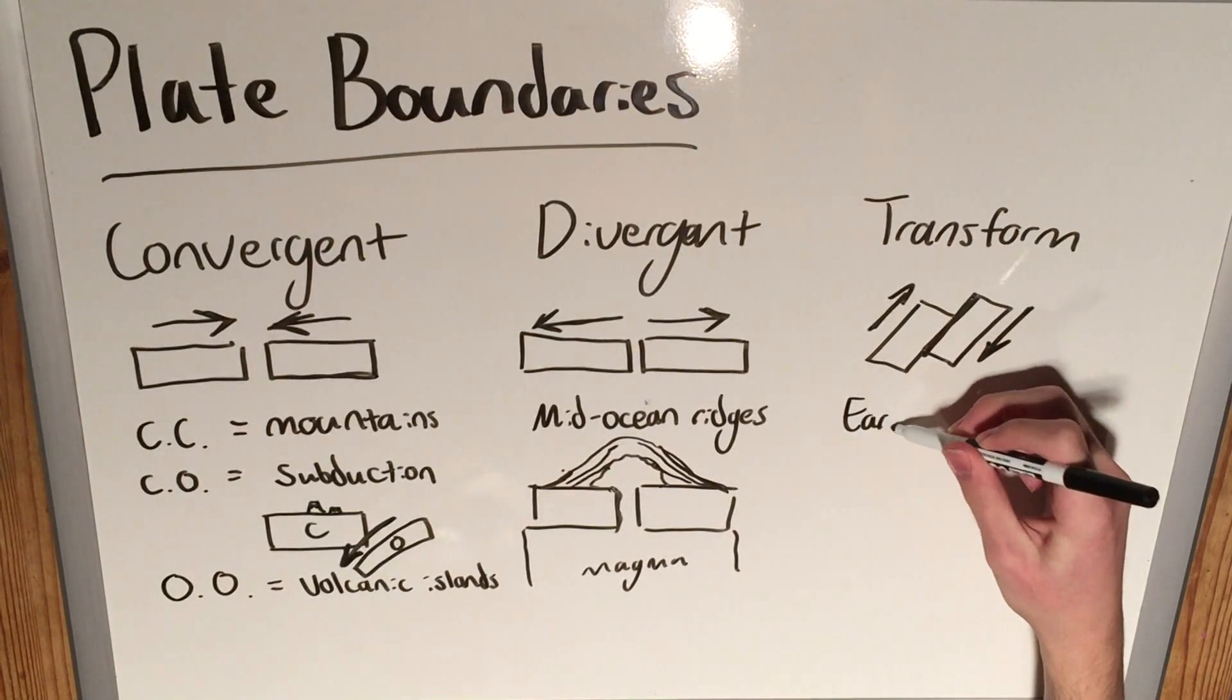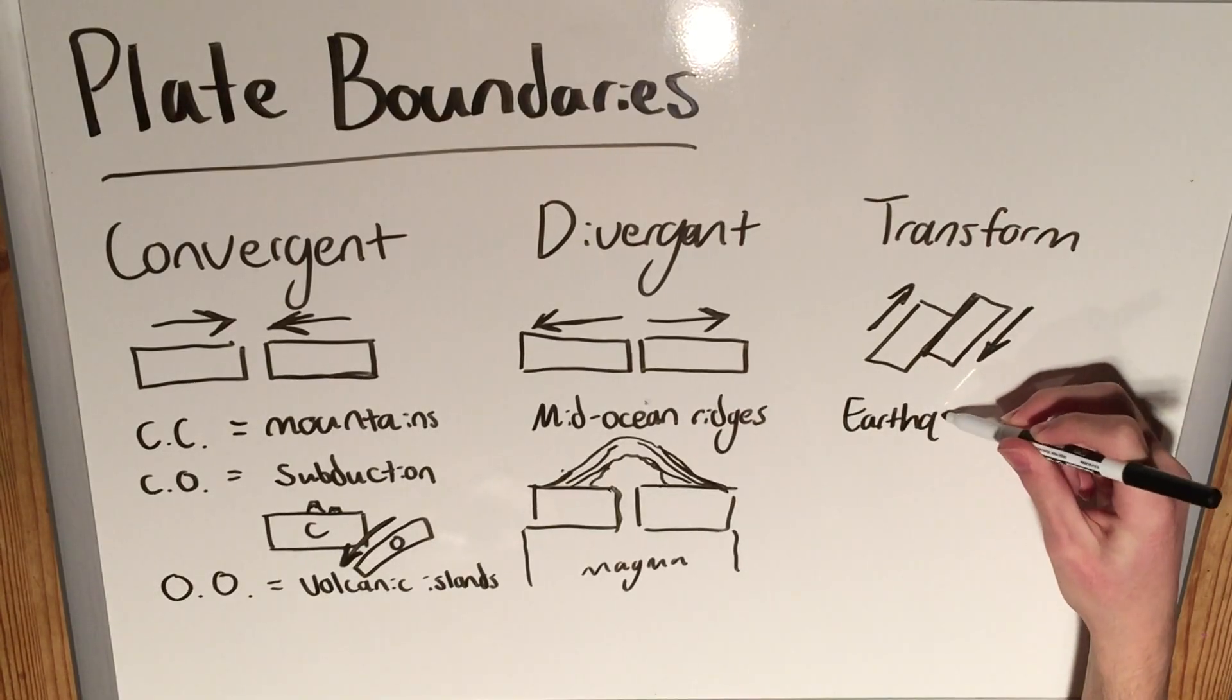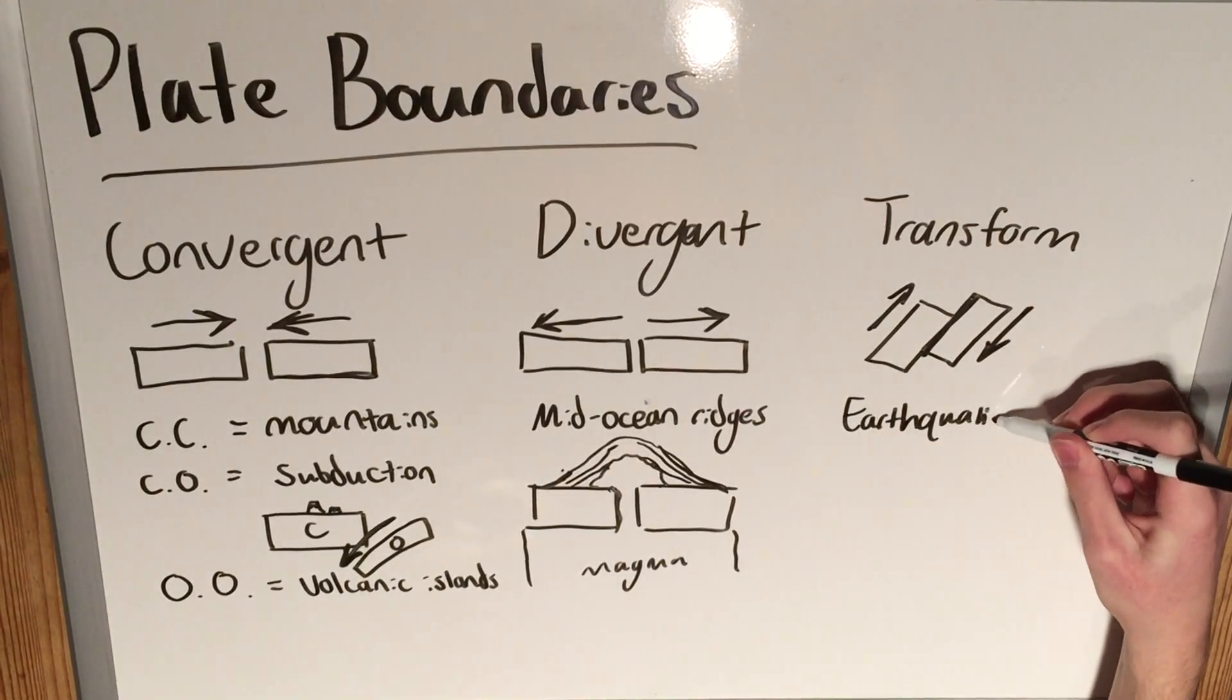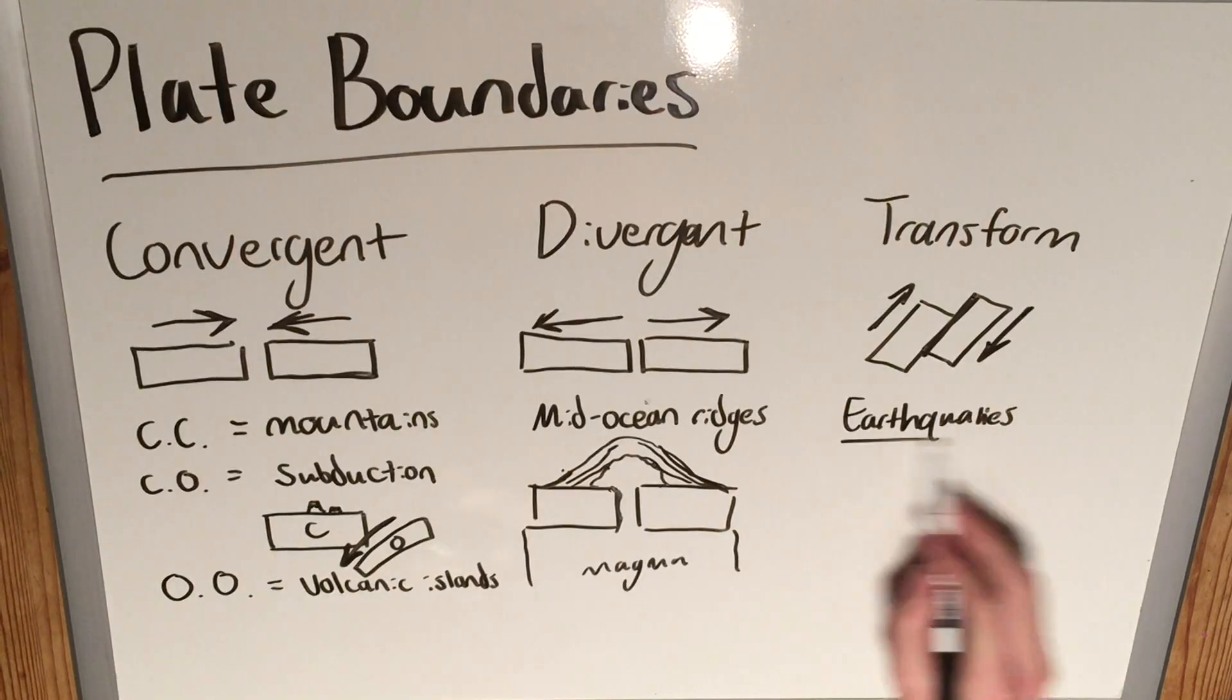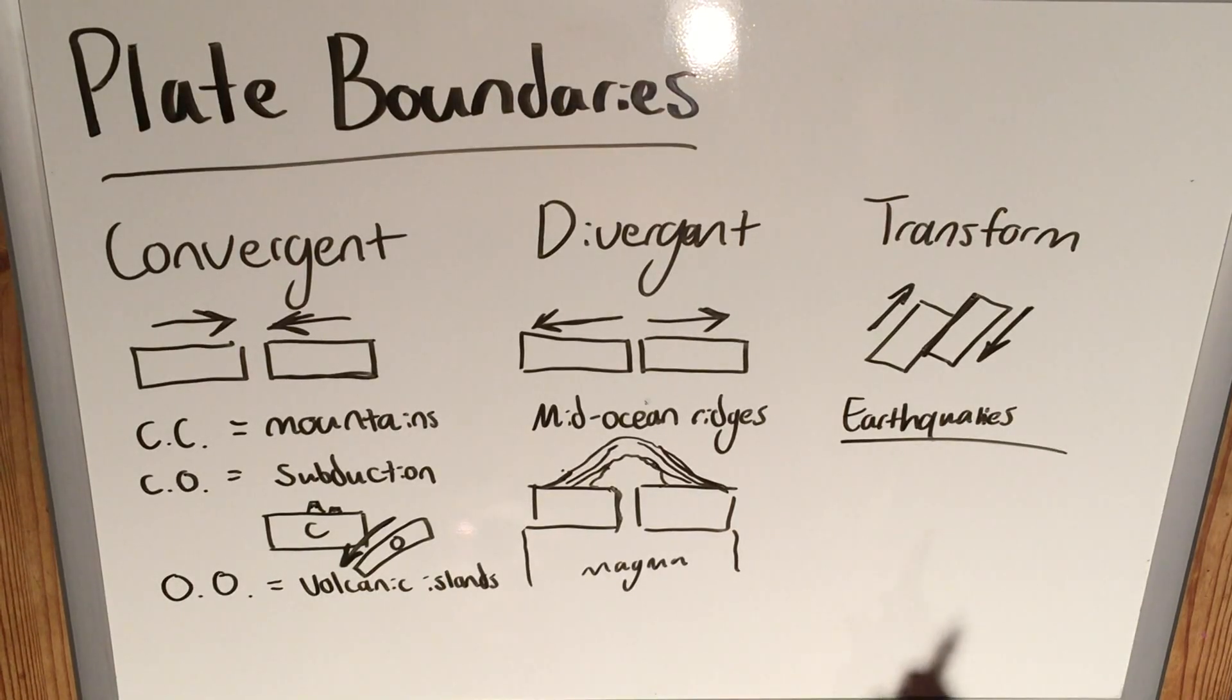The big thing you have to know is just that we're going to have earthquakes. And make no mistake, earthquakes can occur at all of these, but some of the most notable earthquakes you're going to find are at transform plate boundaries. And there's really nothing else to define about these plate boundaries. You'll have ones like in California that create very notable earthquakes, but not a whole lot else to say about transform plate boundaries.